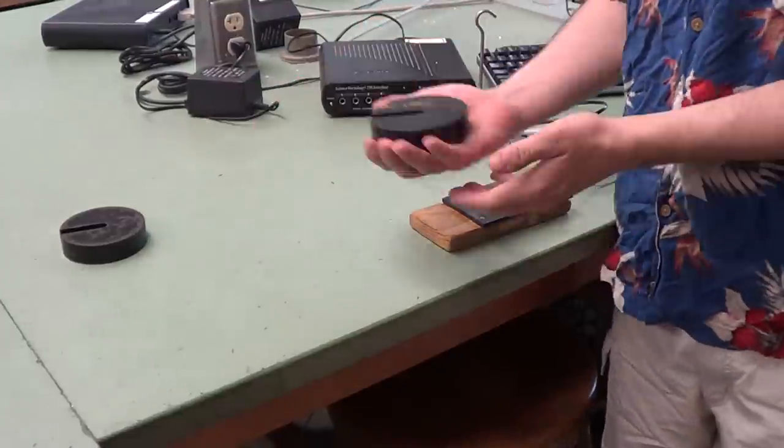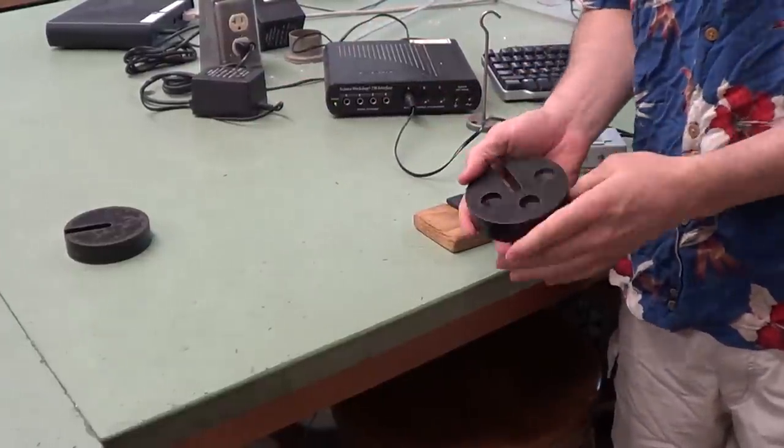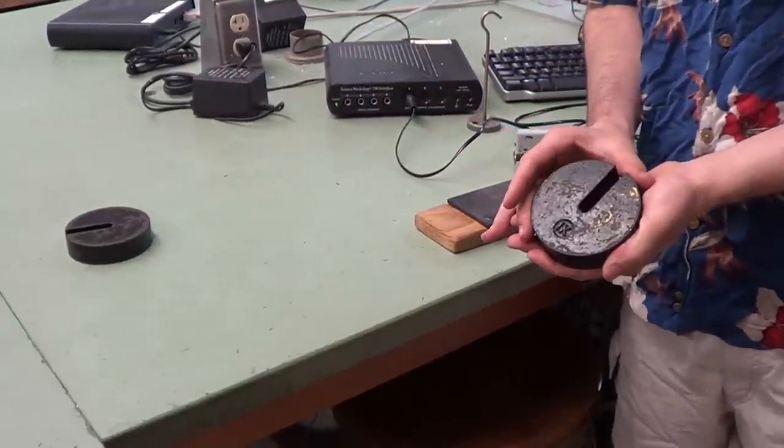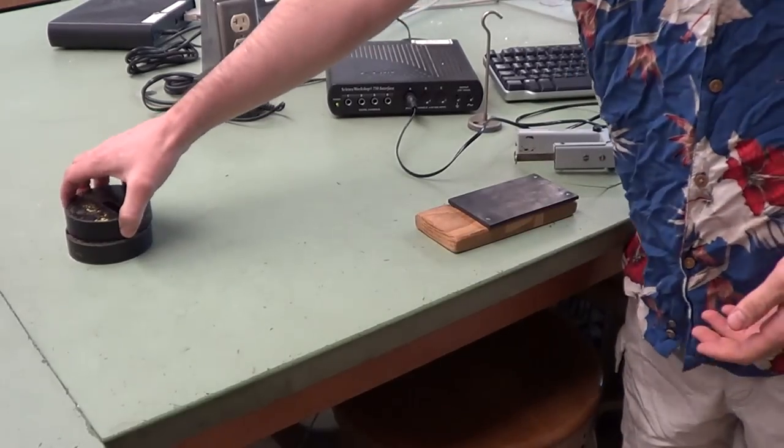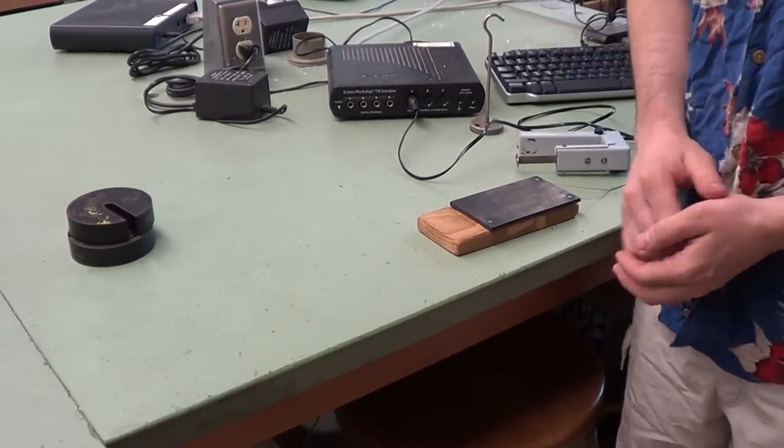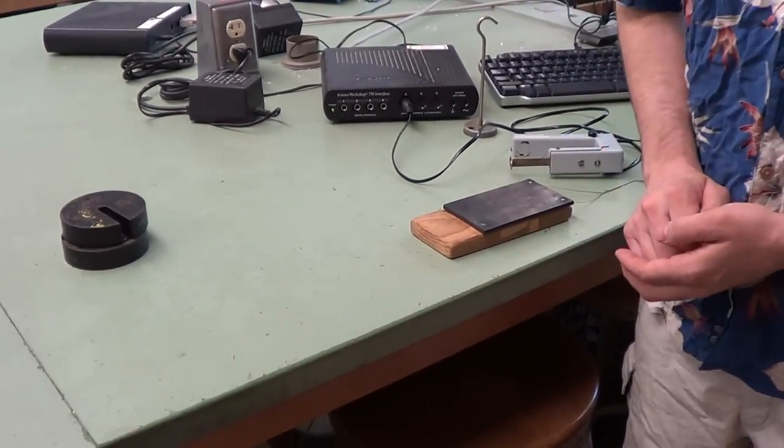The second piece of equipment consists of your weights. In this case, this is a one kilogram disc. Please don't load more than three kilograms on your block, otherwise it might damage the force transducer.